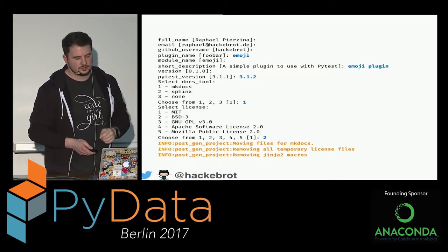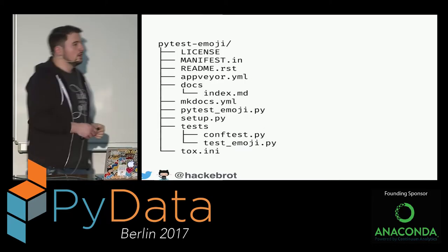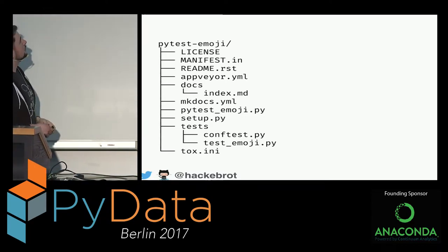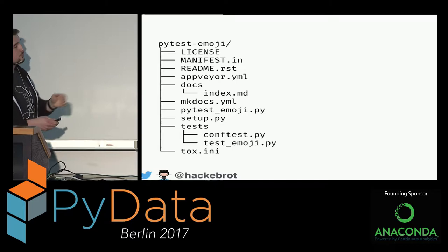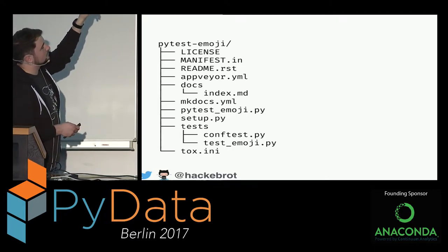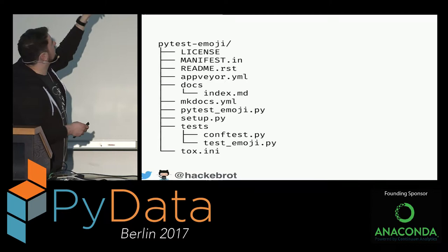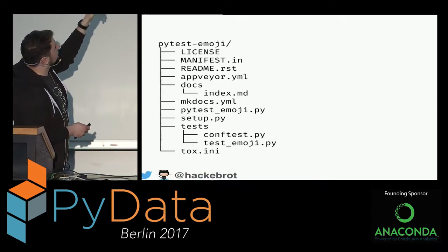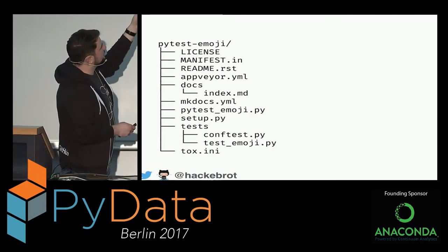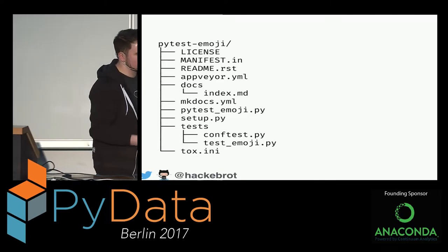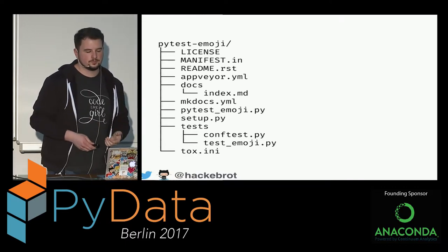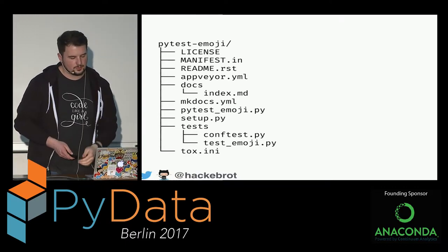If everything is successful, you'll have a directory structure for that particular template. We provided the name 'emoji', which appears in the root directory. There's also a Python script 'pytest_emoji' and a 'test_emoji' test file. Cookie Cutter takes your input and creates files and directories based on it.